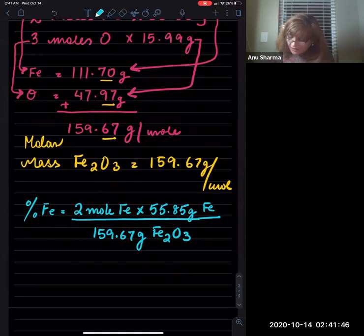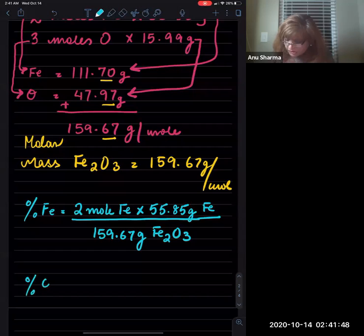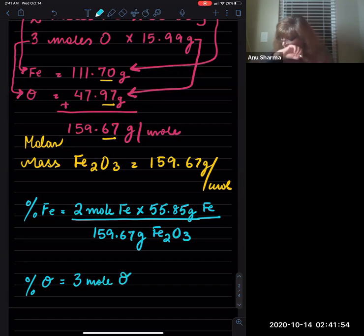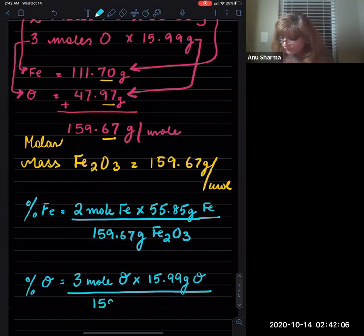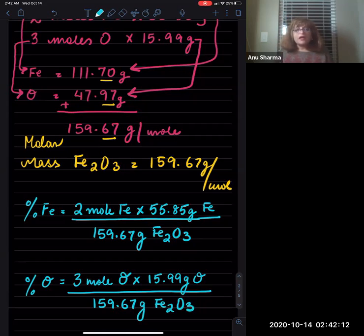Next is the percentage of oxygen. So we have three moles of oxygen, each weighing 15.99 grams of oxygen, and that is present in 159.67 grams of Fe₂O₃.